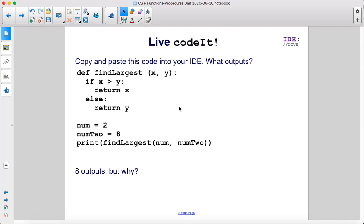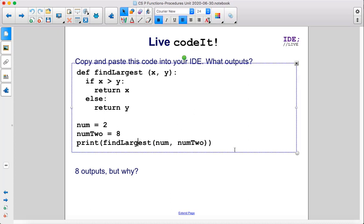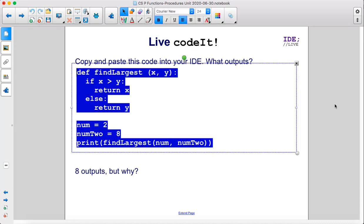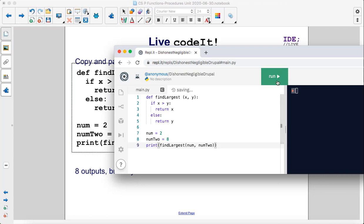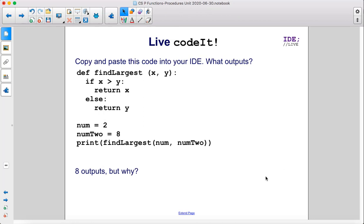Copy and paste this code into your IDE. What outputs? Let's copy it, paste it, run, and we see the number eight. Eight outputs, but why?